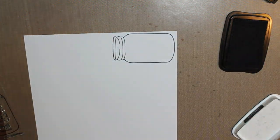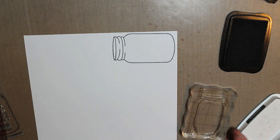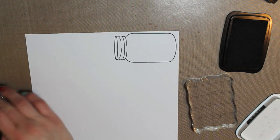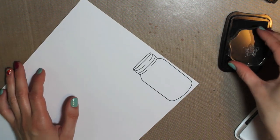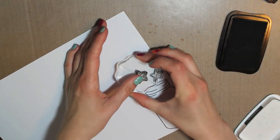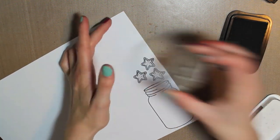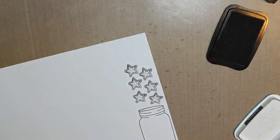So I'm going to start by stamping this mason jar from the Buggin' Outset on a piece of Coordination's 110lb cardstock and I stamped that with Tuxedo Black Memento ink. And then I'm going to take the little star and stamp that five or six times right above it. Those are going to be my cookies that go in the jar.